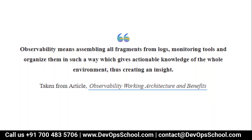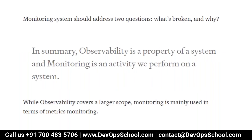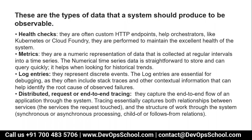Everything you capture — logs, metrics, events from different systems and different tools — and the system that helps you create actionable knowledge in a certain environment, that's called observability. Observability is important. A monitoring system should address two questions: what's broken and why it's broken. Observability covers a larger scope. Monitoring is mainly used in terms of metrics monitoring. In summary, observability is a property of a system, and monitoring is an activity we perform on a system. Now the question is: what are the types of data the system should produce so we can observe those systems?